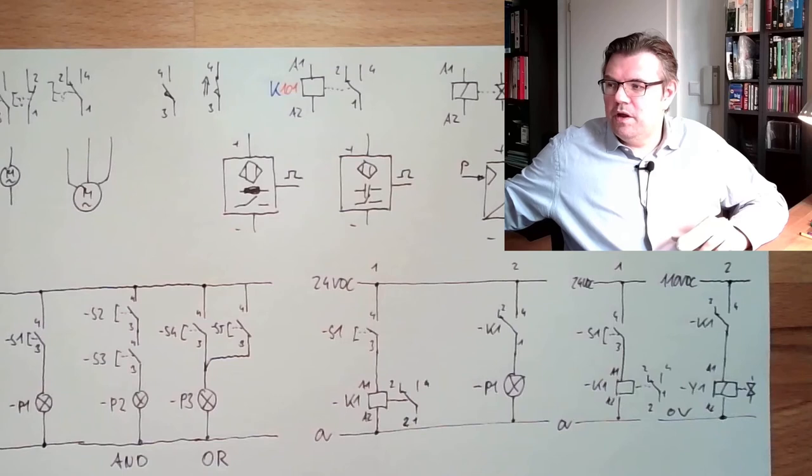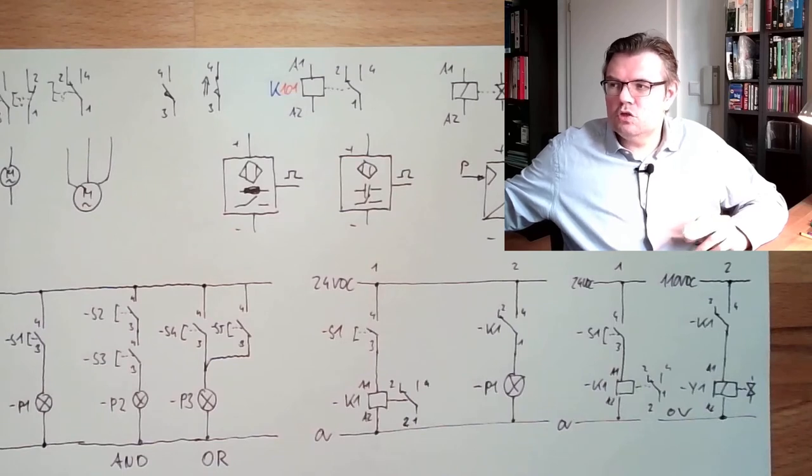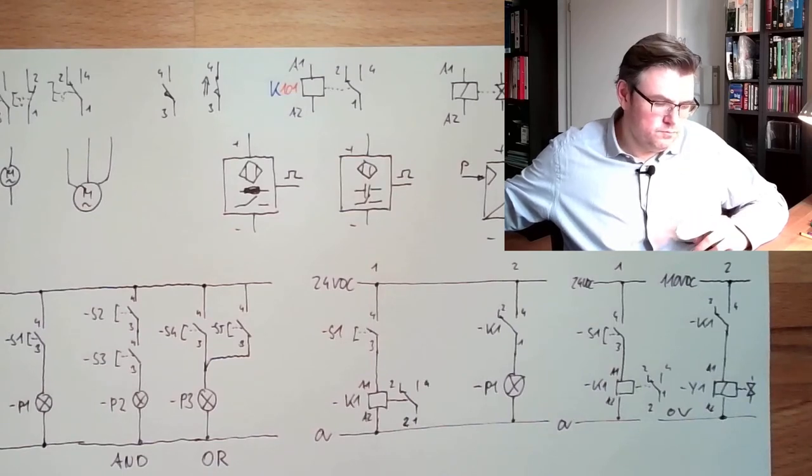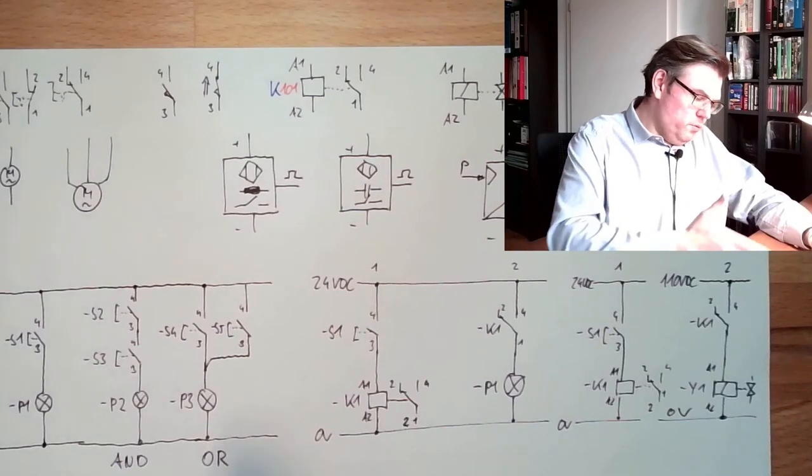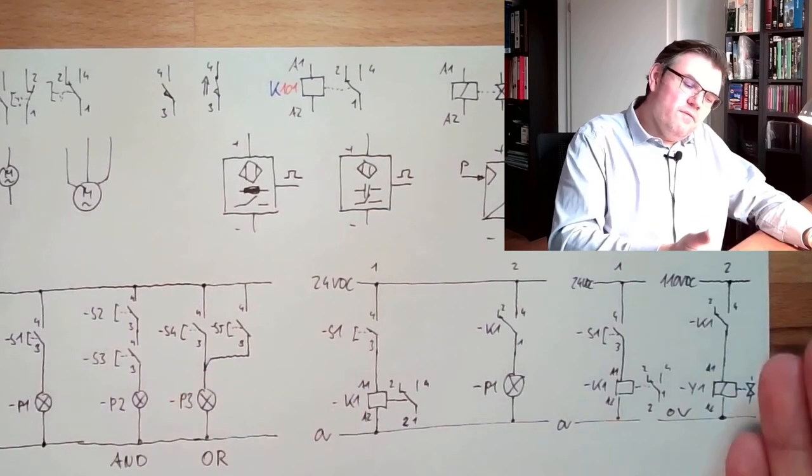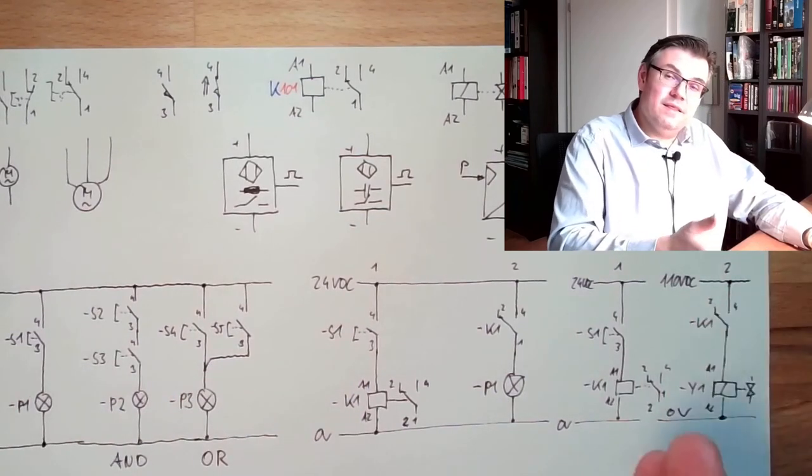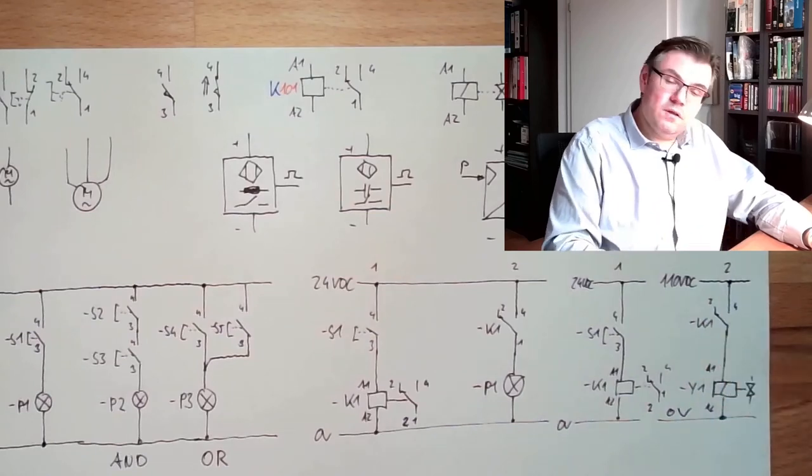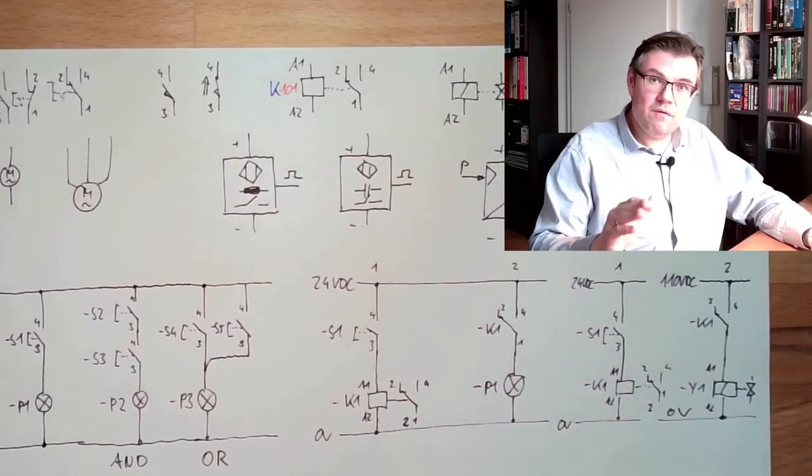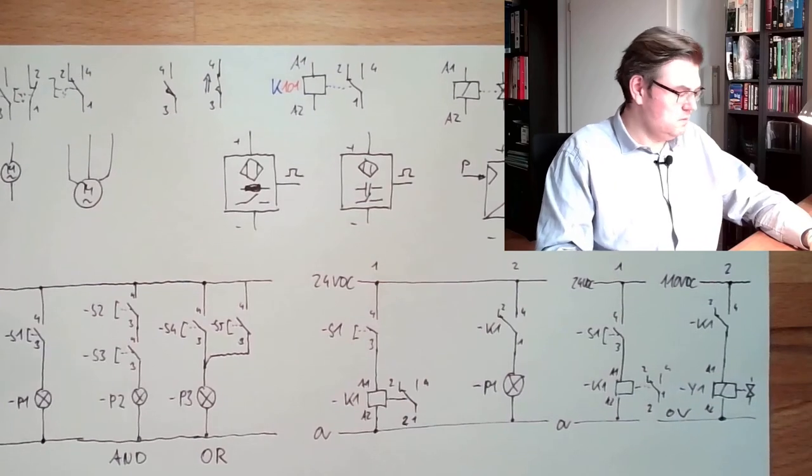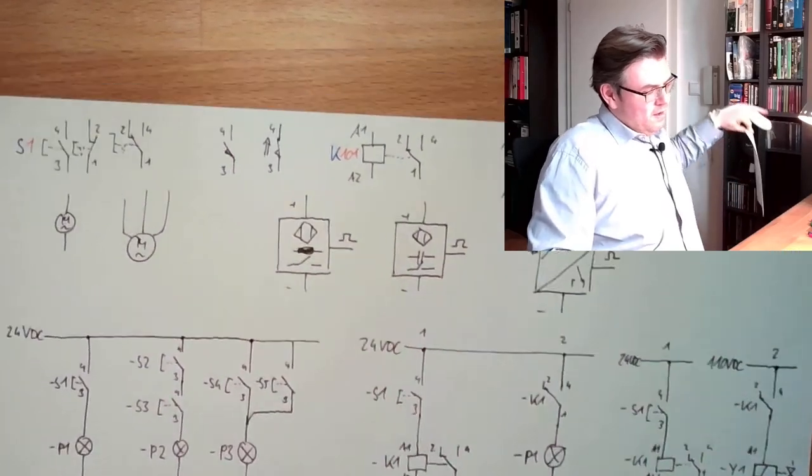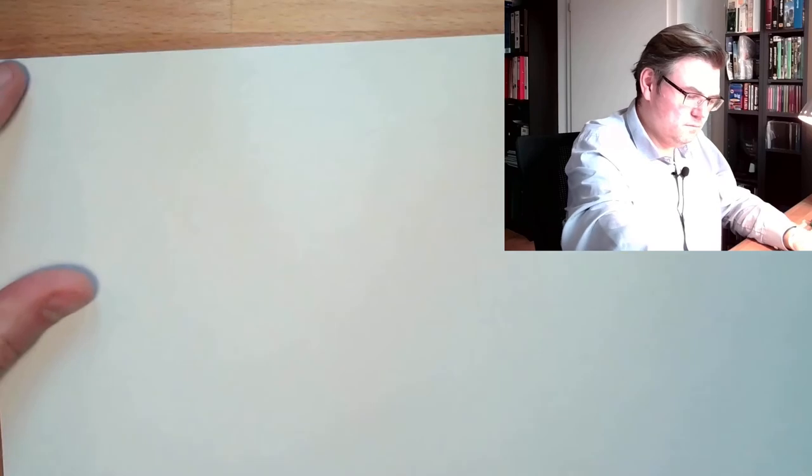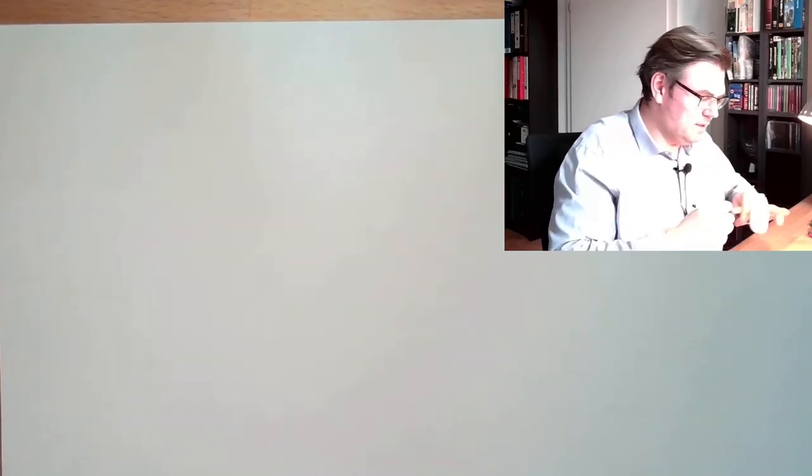So, indirect operation. This is usual. So, we have an AND, we have an OR. If I want to have a NOT here, I simply use the normally closed contact and so on. NOT, AND, OR. We have called memory. Storage.